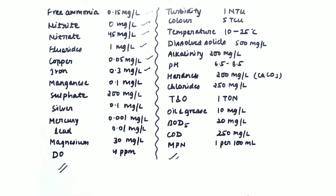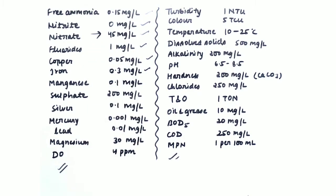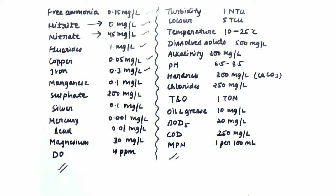The higher the permissible limit, the less harmful the element. Nitrate has a permissible limit of 45 mg per liter, showing it is less harmful. Nitrite has a permissible limit of 0 mg per liter, showing how harmful it is. Nitrite indicates the presence of organic content or microorganisms, so it cannot be tolerated under any condition.